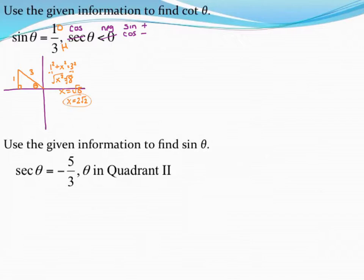So my adjacent side, if I go ahead and label that back on my triangle, is going to be 2√2. But remember, that went in the negative direction. So I need to throw a negative on that, and that does matter. So now all three sides of my triangle are identified. I can go ahead and answer their question.